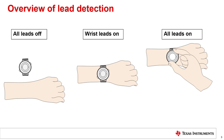Depending on the number of electrodes and their position relative to the bottom and top face of the watch, the possible lead configuration could be slightly different from those illustrated. The utility of being able to distinguish between the different configurations should be apparent. For example, in the all-leads-off and wrist-leads-on configurations, ECG signal acquisition is not possible. Therefore, detection of these two configurations could lead to a powering down of the ECG signal chain in the analog front end to save battery power.